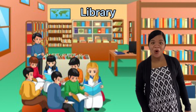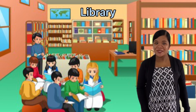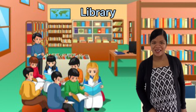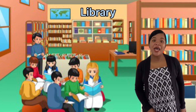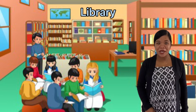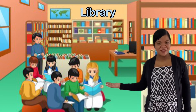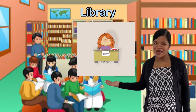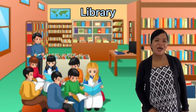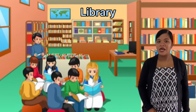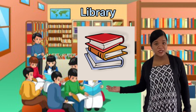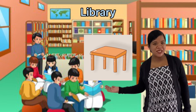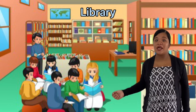Where do we go when we want to read books? Correct — in the library. Who is working in the library? We have the librarian. Inside the library we can see different things such as books, a bookshelf, tables, and chairs — so we can sit and read our books.